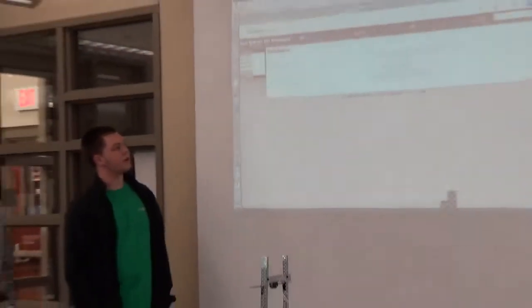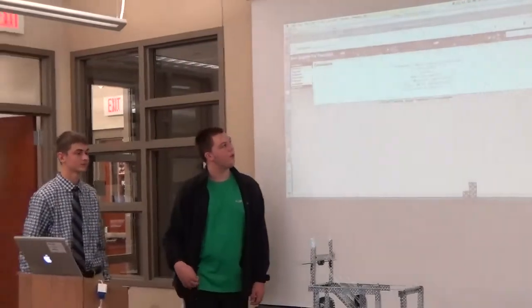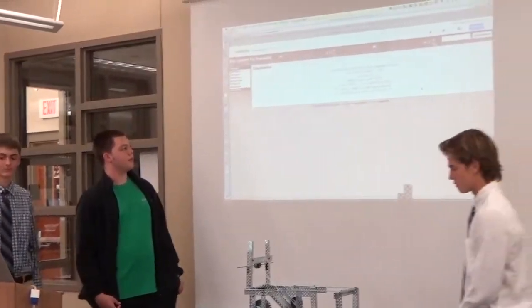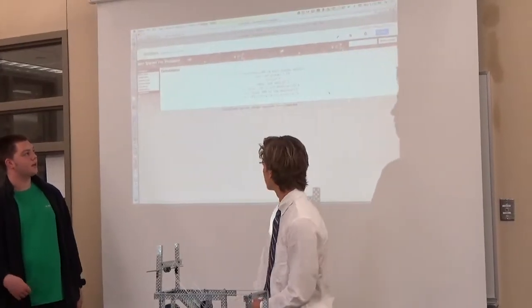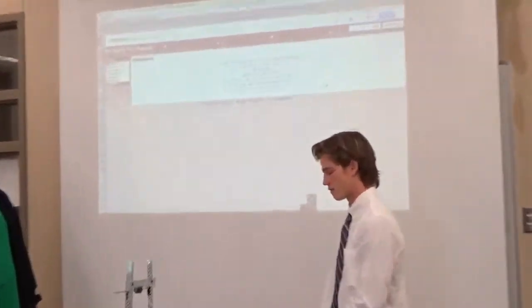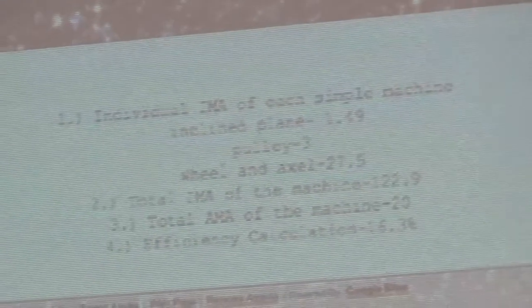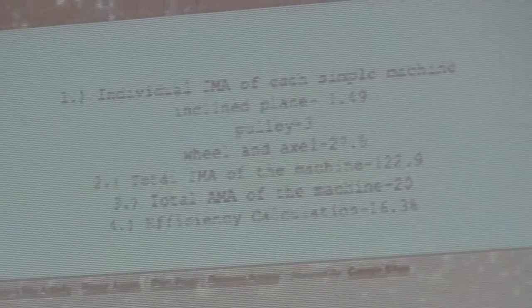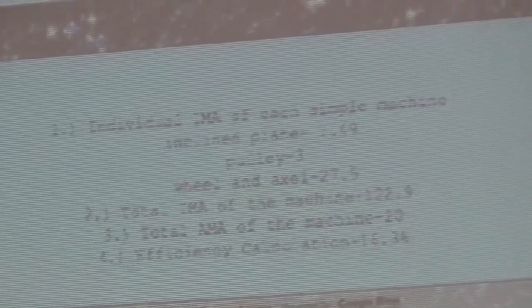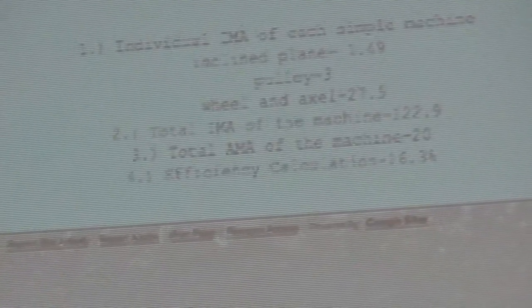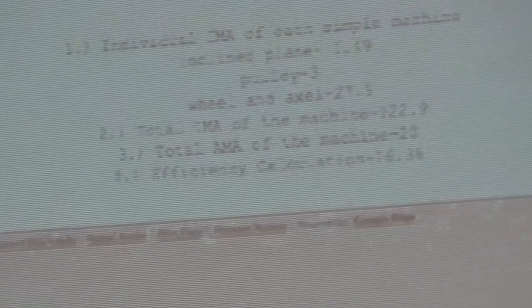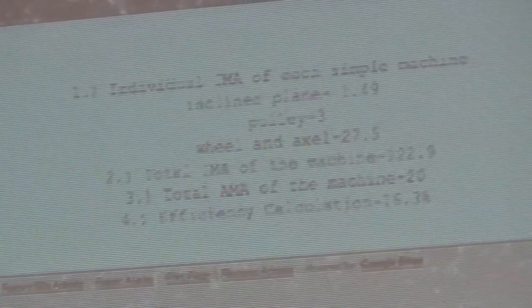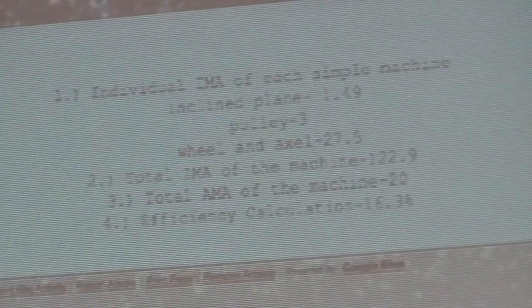These are our calculations. So for the individual IMAs, for the inclined plane it was 1.49, for the pulley it was 3, and the wheel and axle it was 27.5, and the total IMA of the entire machine was 122.9, and the AMA was 20, and our efficiency was about 16.3%.